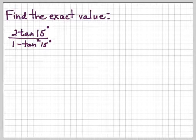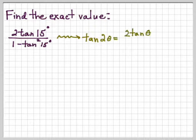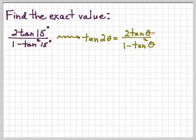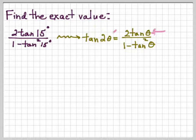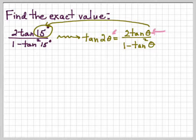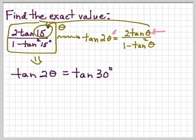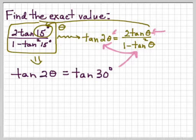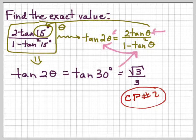Find the exact value of: 2 tangent 15° over 1 minus tangent squared 15°. We don't know tangent of 15° directly, but we recognize this matches the identity tangent 2θ = 2 tangent θ over 1 minus tangent squared θ. Here θ = 15°, so 2θ = 30°. This expression equals tangent of 30°, which is √3/3. Go do checkpoint number 2 because it's similar.